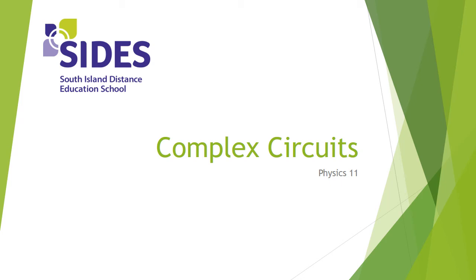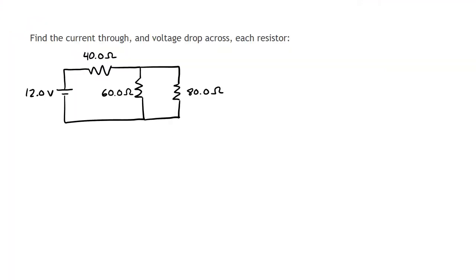In this video we're going to look at how to break down a complex circuit and solve for the current and voltage with each component or resistor within the circuit. Here's our example for today: find the current through and voltage drop across each resistor. We know the values of each resistor and the voltage of the power source. The first thing you should always do is start naming the different components of the circuit.